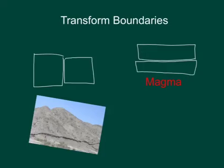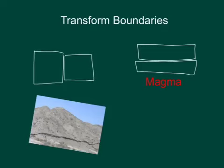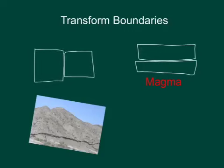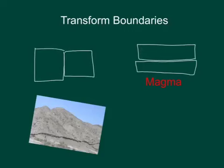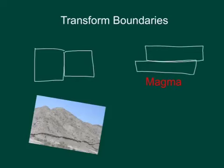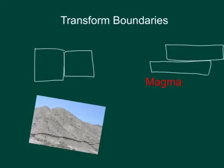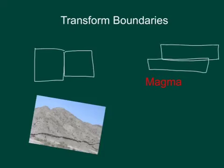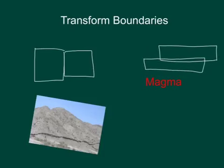And then there's transform boundaries. At transform boundaries, there are two plates moving alongside each other. They can both be moving in the same direction but at different speeds. They can move in opposite directions. And then they can also be moving one on top of the other — same direction, different speeds, or different directions.